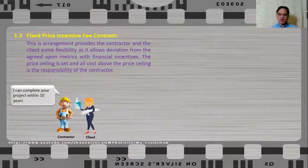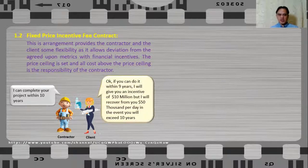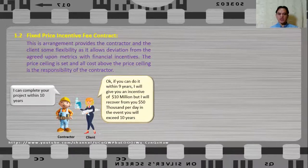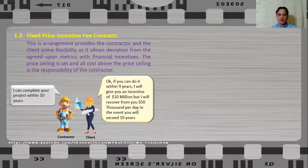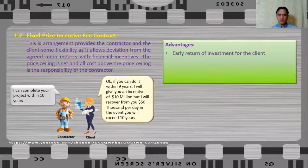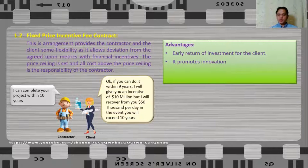For example, the contractor can complete the project in 10 years — that is the agreed duration. But the client says: if you can do it in 9 years, I will give you an incentive of $10 million, but I will also recover $50,000 per day in the event you exceed 10 years. So the incentive may come in the form of positive and negative incentive — it is like a carrot and stick. The contractor will use all available innovation and technological advancement to achieve the metrics and receive the incentive.